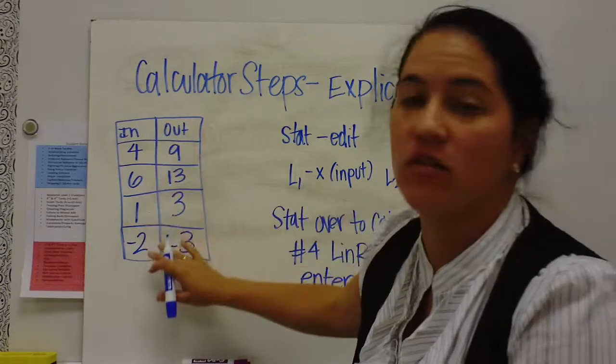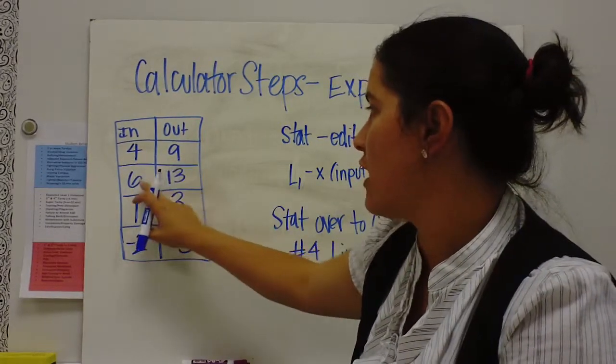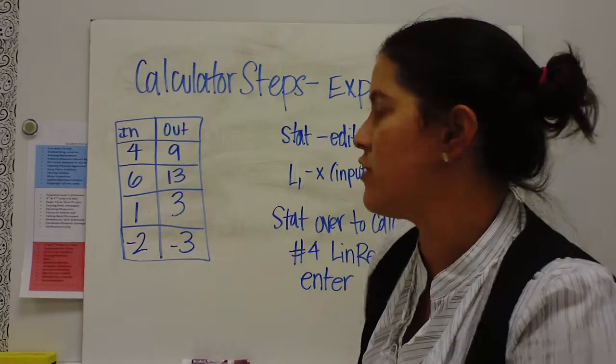So I'm giving you an input-output table. Input, output. And 4, 9, 6, 13, 1, 3, negative 2, negative 3.